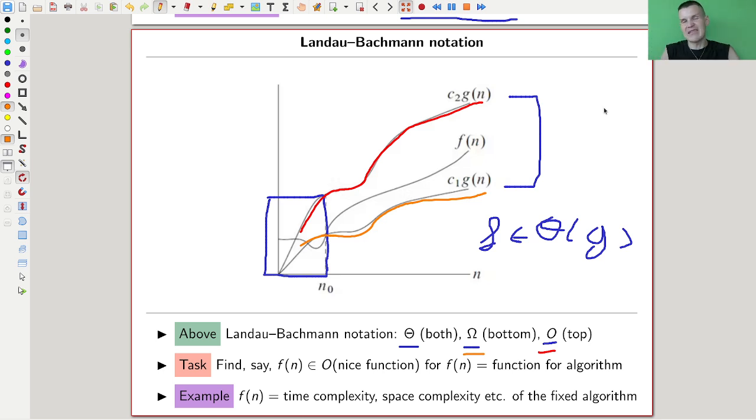f of n is our function for our algorithm. Let's say time complexity, space complexity, something like that. Could even be, usually people study time complexity, but it can even be space complexity. If you ever run a huge calculation on a machine, it might be important to keep in mind how much space is used, not just how much time is consumed.